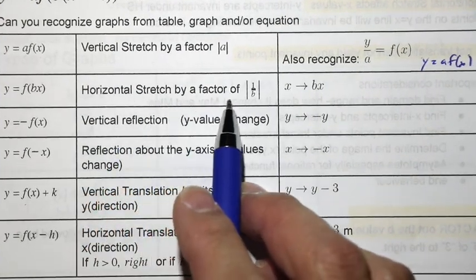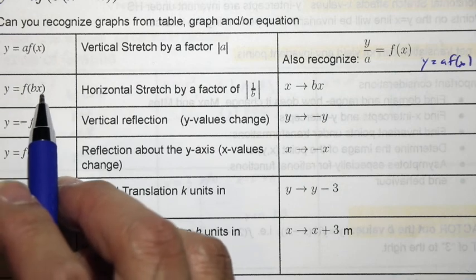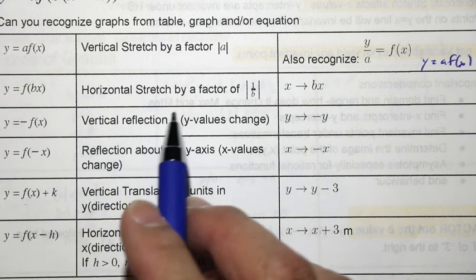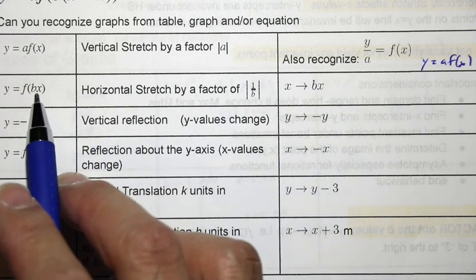Here, a horizontal stretch factor by a factor of one over b. If y is equal to f of bx, remember that this b value is different than what the horizontal stretch factor is. They are reciprocals.